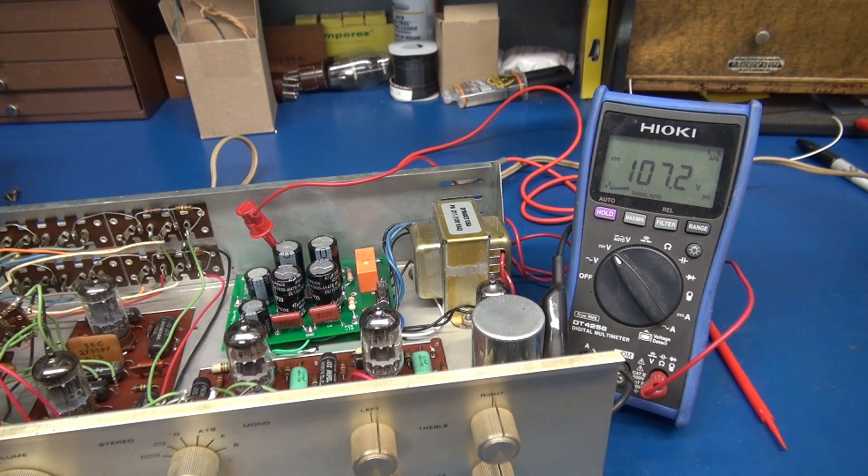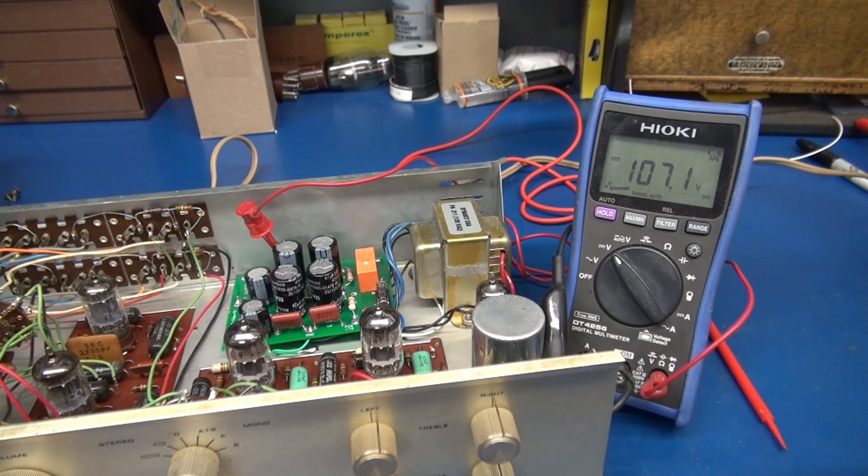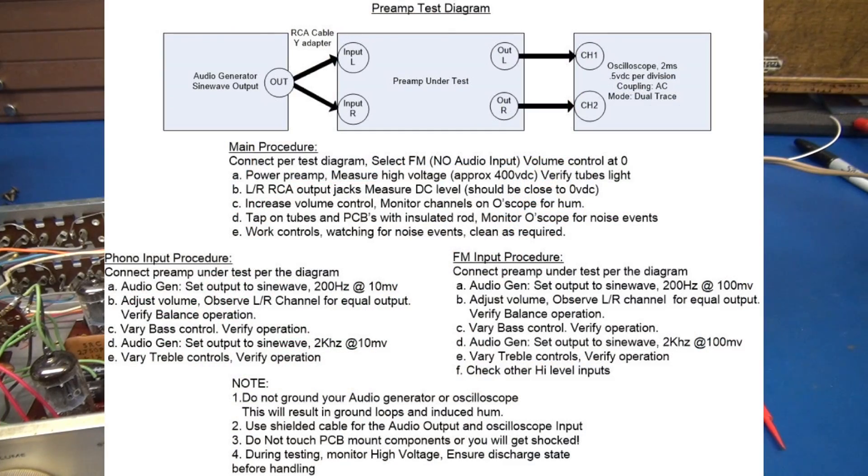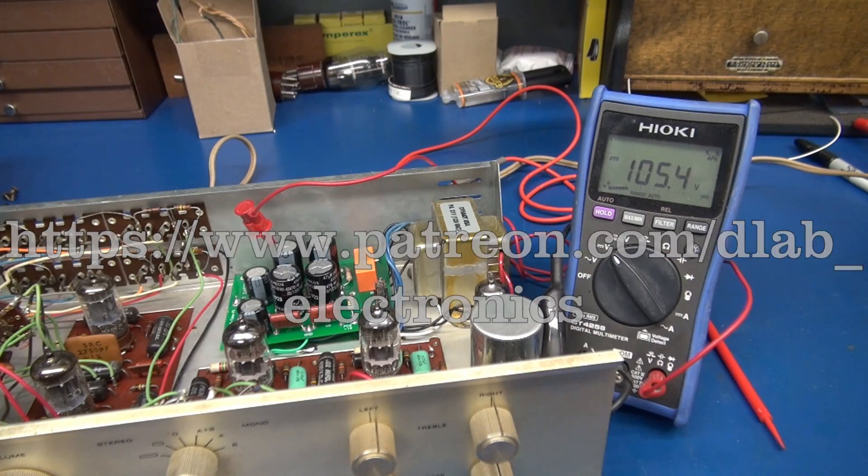To prove my point, this preamp has been shut off now for over 10 minutes. You can see we still have 107 volts DC and it's just going to sit there until it finds a discharge path. Don't let that be you. If you'd like a copy of this test procedure, just shoot me an email and I'll get a copy right out to you.